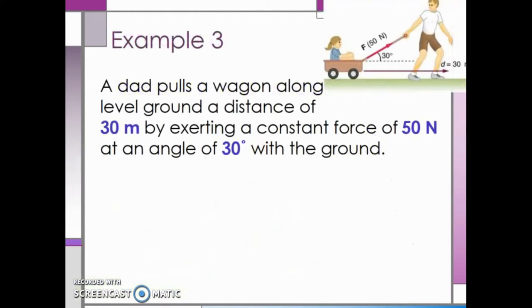In this example, we have the force being applied at an angle to the direction of motion. Here a dad pulls a wagon along level ground a distance of 30 meters by exerting a constant force of 50 newtons at an angle of 30 degrees with the ground. How much work does he do?